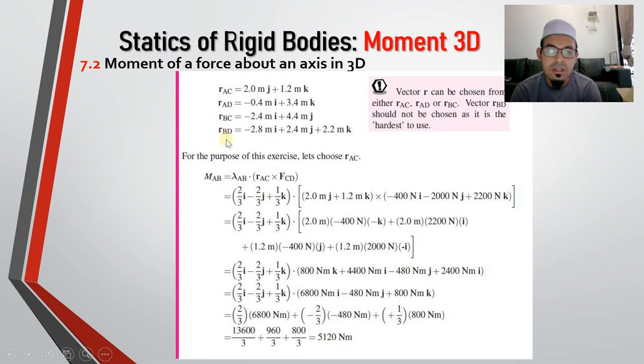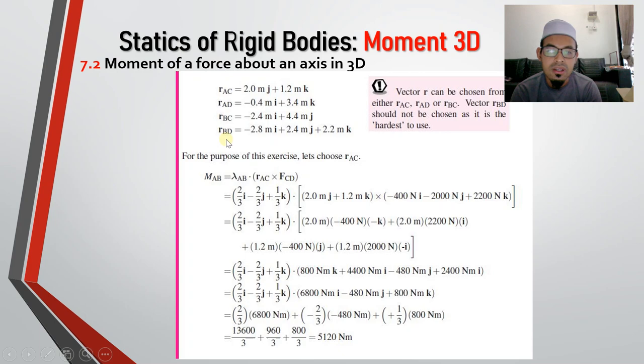And if you choose another distance, let's say R_AD, R_BC, or R_BD, you can actually have the same answer at the end of this step. All right.